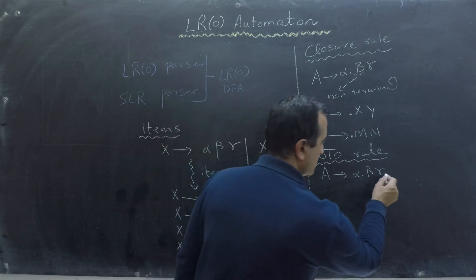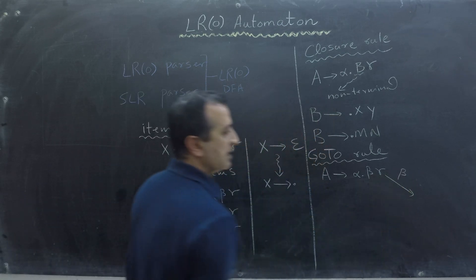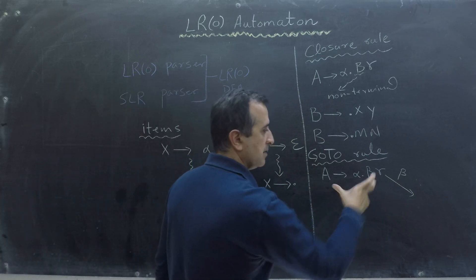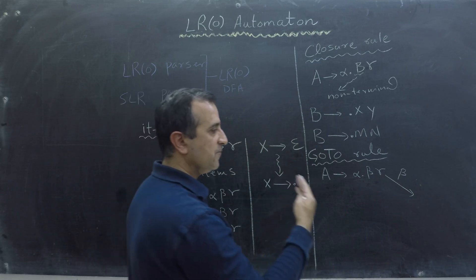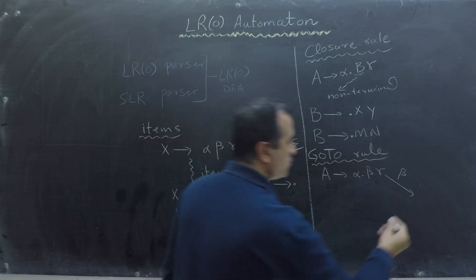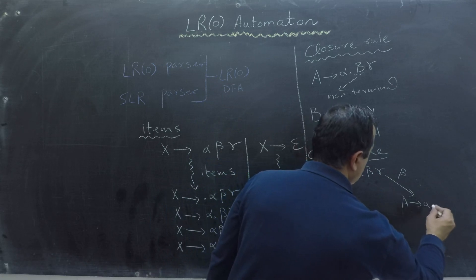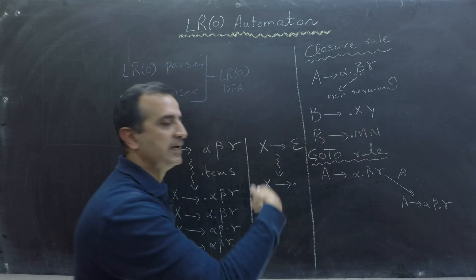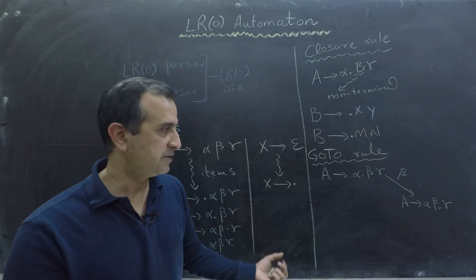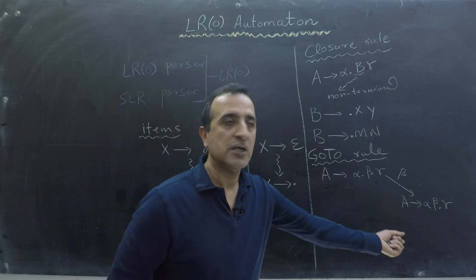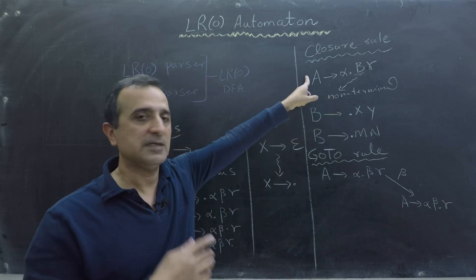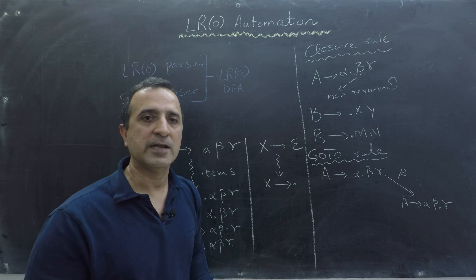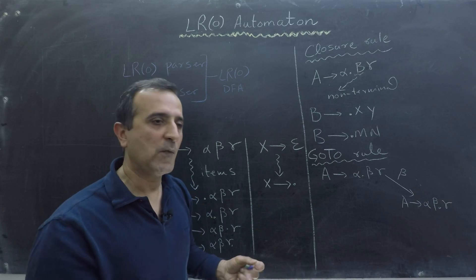I will have a transition on beta and the new state must have this same production but the dot will move one step towards the right. So the new state will have A goes to alpha beta dot gamma. The dot has moved towards the right and then we will add more items in this new state using our Closure rule. So this rule tells us how to add items in a state of DFA and this rule tells us how to create transitions from a state of DFA.